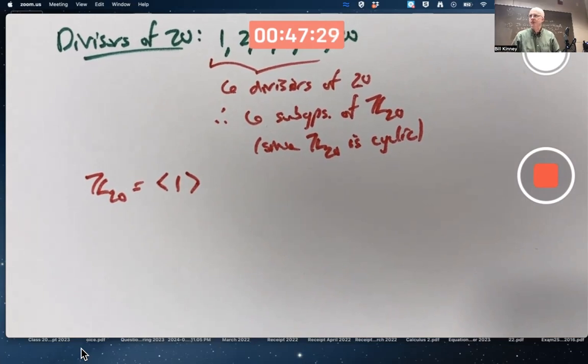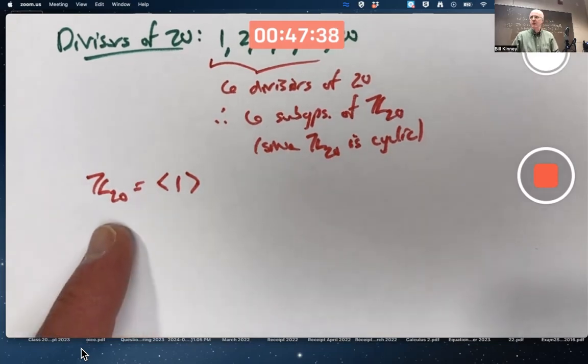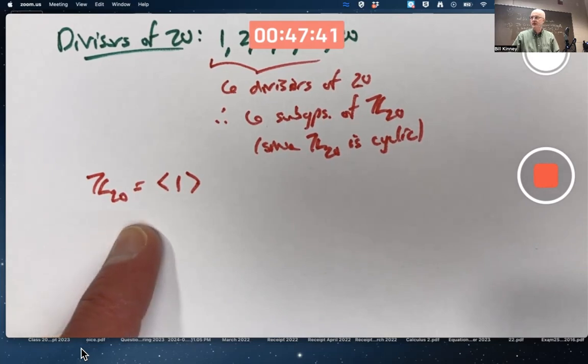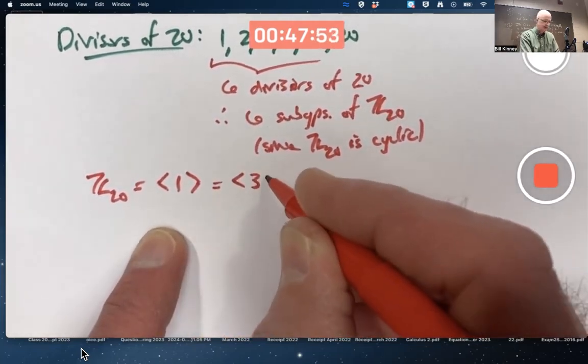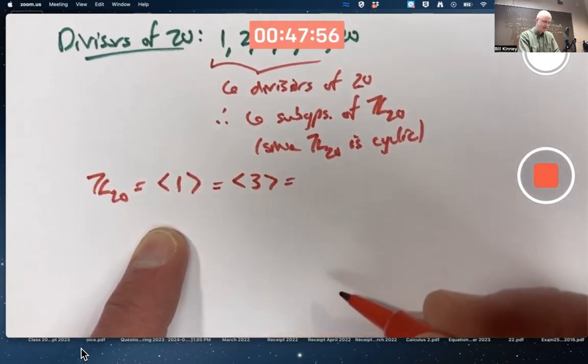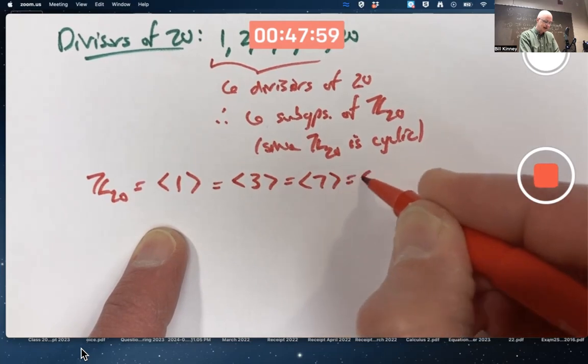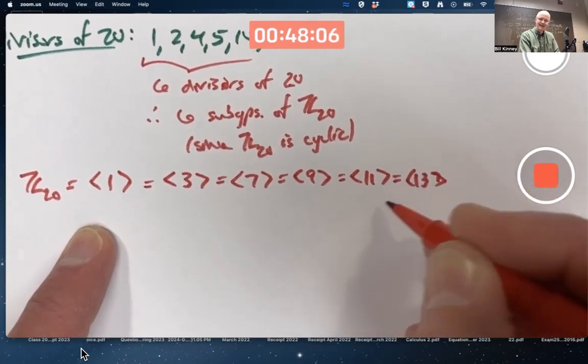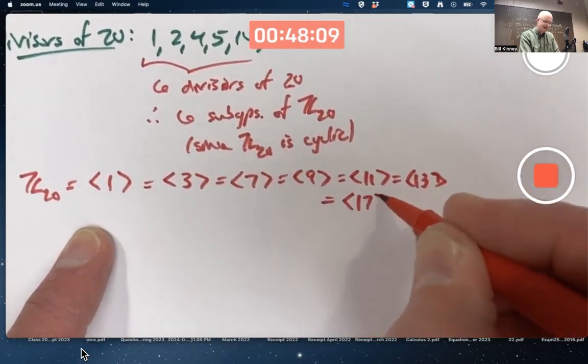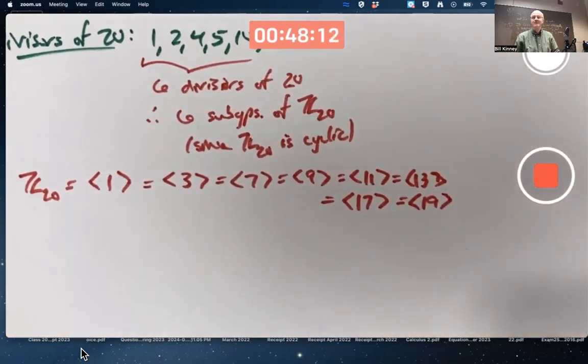Might be good for us to practice listing out the generators. Certainly there's the simplest generator, just 1. But think about chapter 4. A cyclic group of order 20, if it's Z20 in particular, the generators are going to be the numbers less than 20 that are relatively prime to 20. 1, we want to avoid even numbers, 3, we want to avoid multiples of 5, 7, 9, 11, 13, 17, and 19. There are 8 generators of Z20.